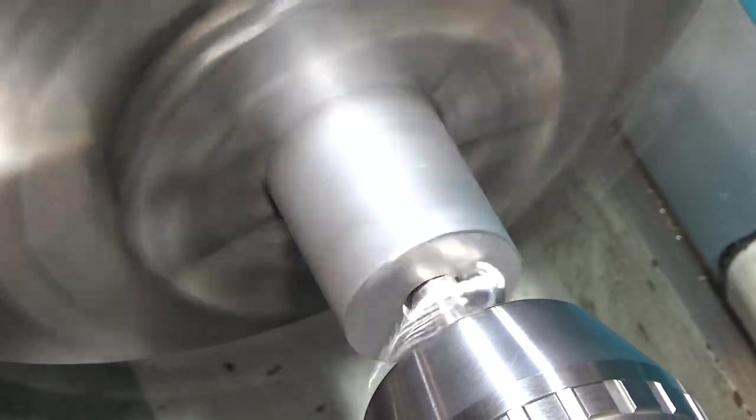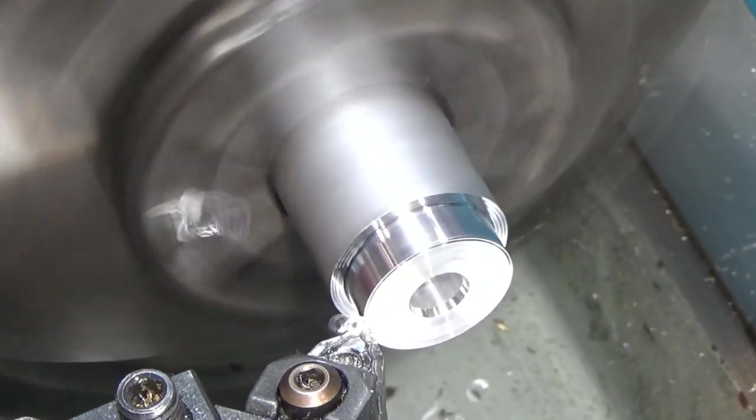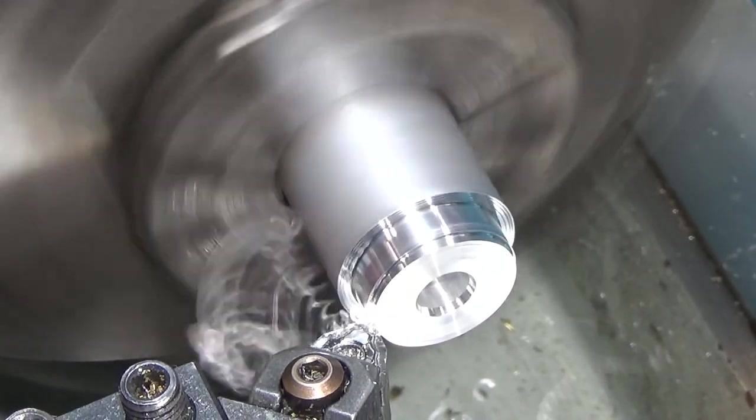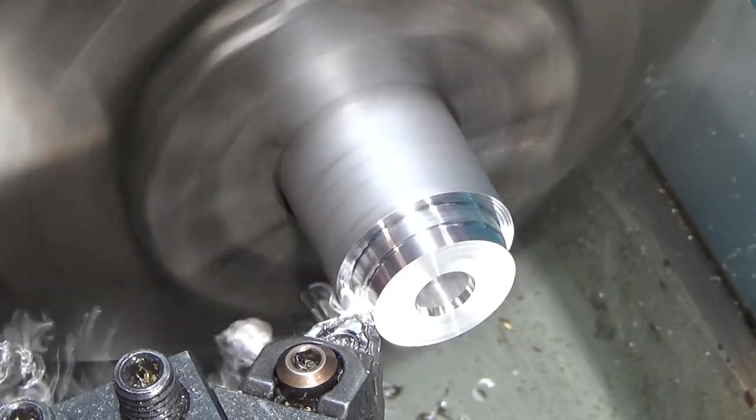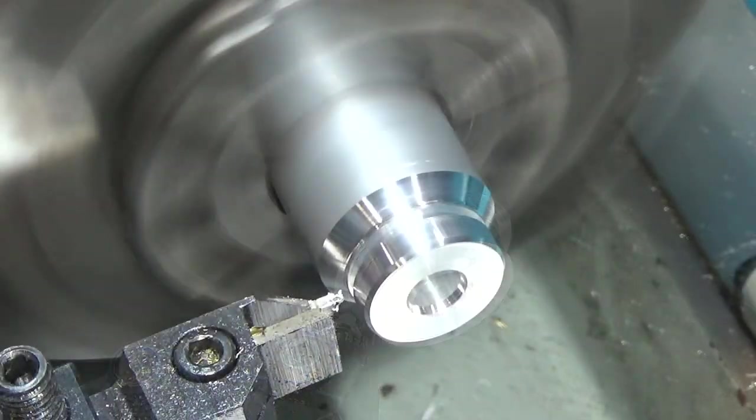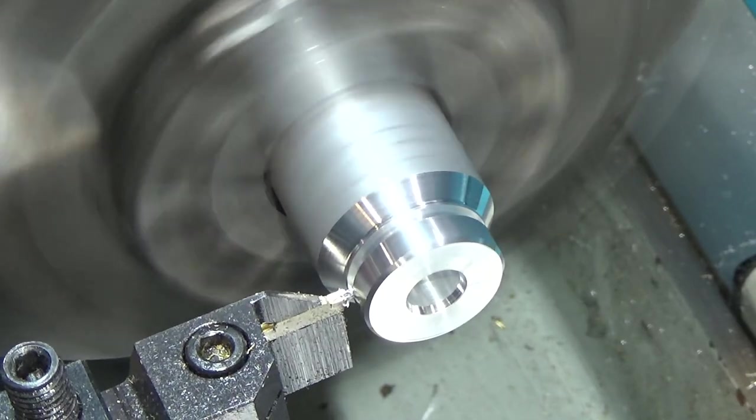Throw on a chamfer because that'll just make it easier to weld and give it more surface area for the weld to come in contact with. Taking the one inch stock down to the diameter, final diameter.